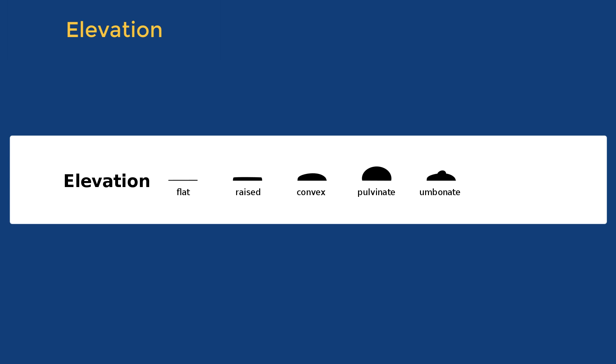If the colony is convex with the center clearly protruding, kind of a fried egg appearance, the colony is called umbonate. And if the center of a convex colony dips in, sort of like a volcano, it is called crateriform.